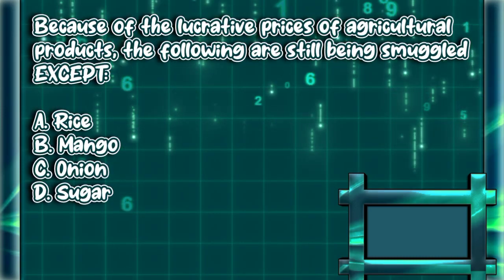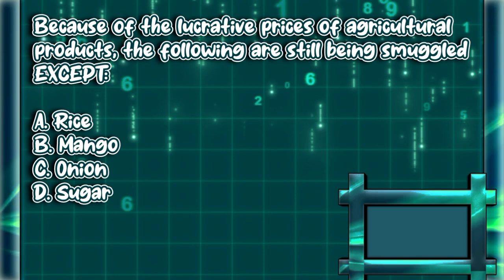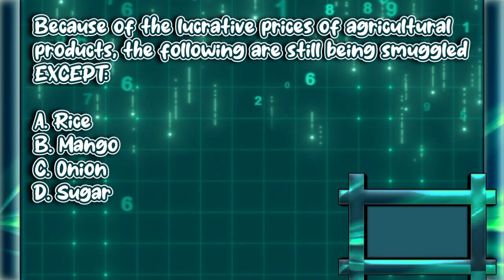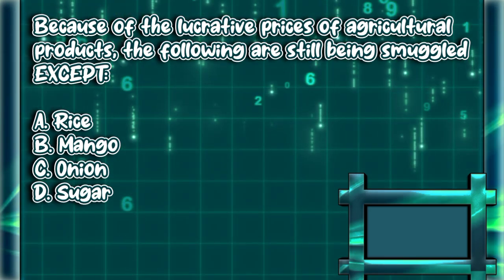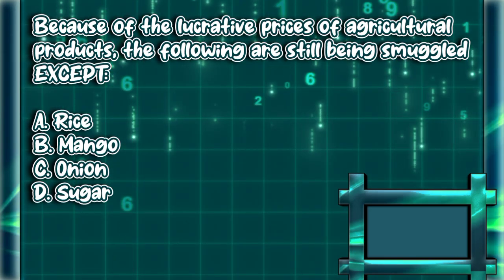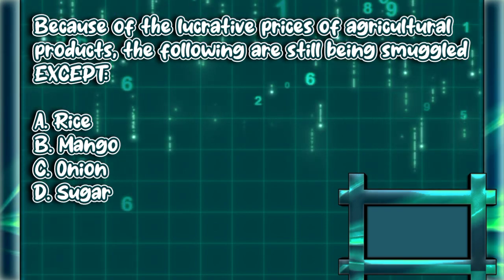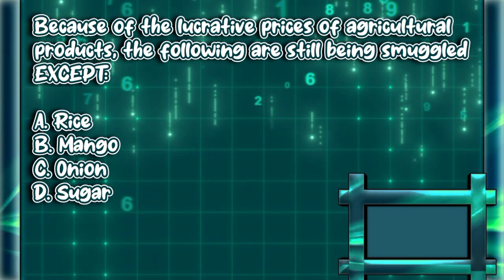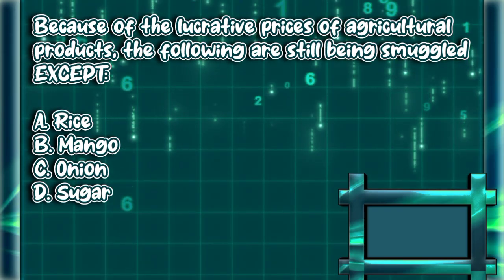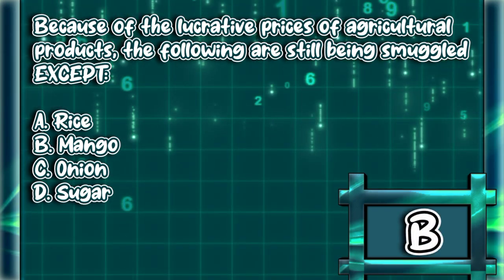Because of the lucrative prices of agricultural products, the following are still being smuggled, except: A. Rice. B. Mango. C. Onion. D. Sugar. The answer is letter B.